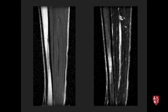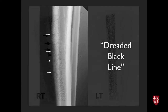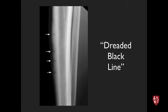A football player with shin pain had a bone scan showing multiple foci of increased tracer activity along the anterior tibia bilaterally. In nuclear medicine, long linear areas of activity suggest shin splints while more focal uptake may indicate stress fracture. Advanced imaging was pursued, leading to plain radiographs.